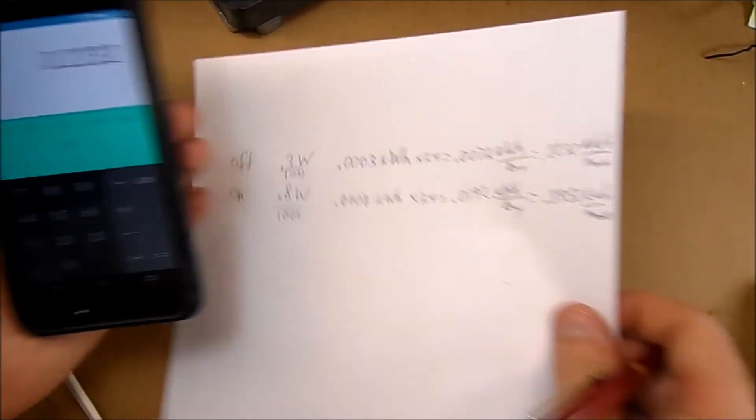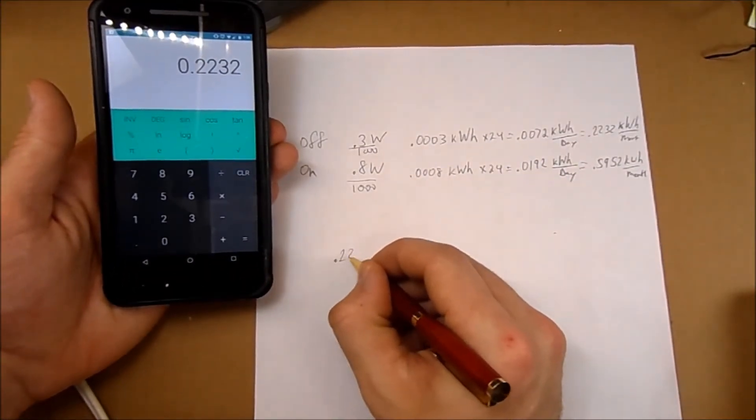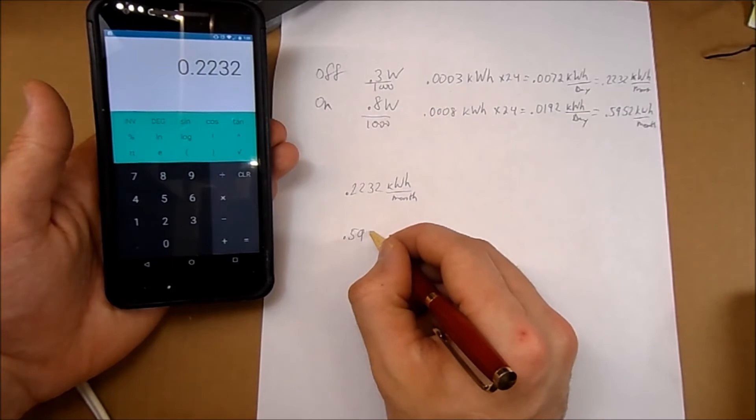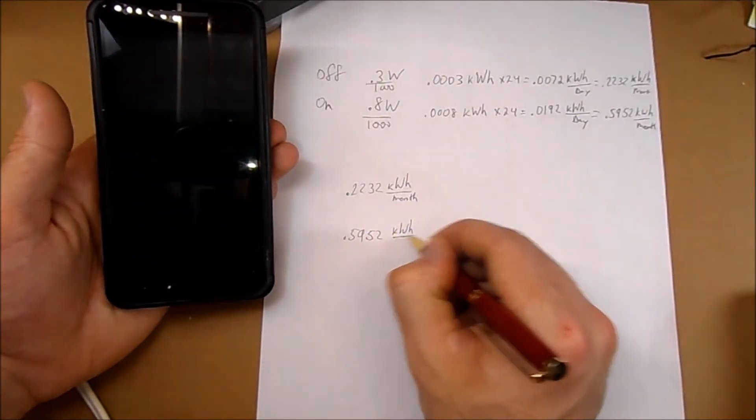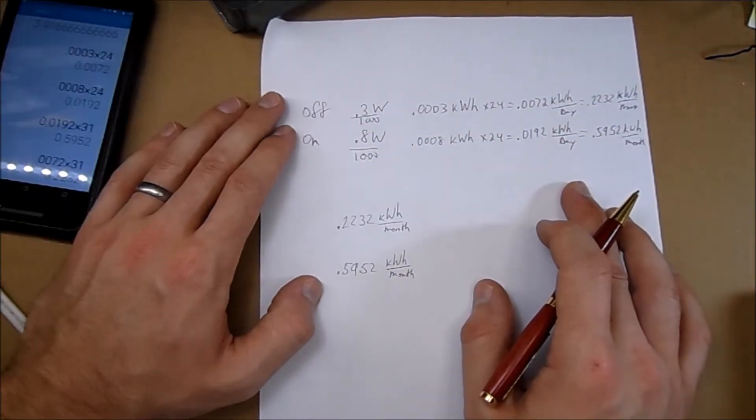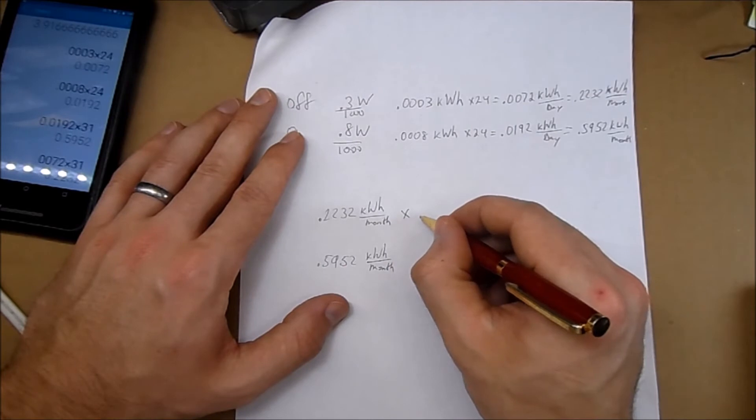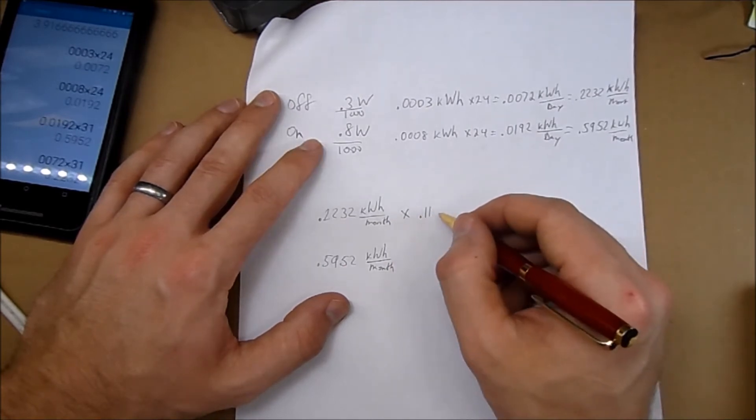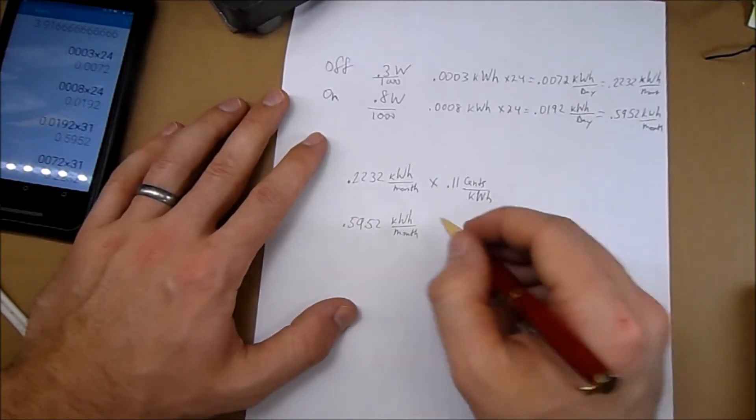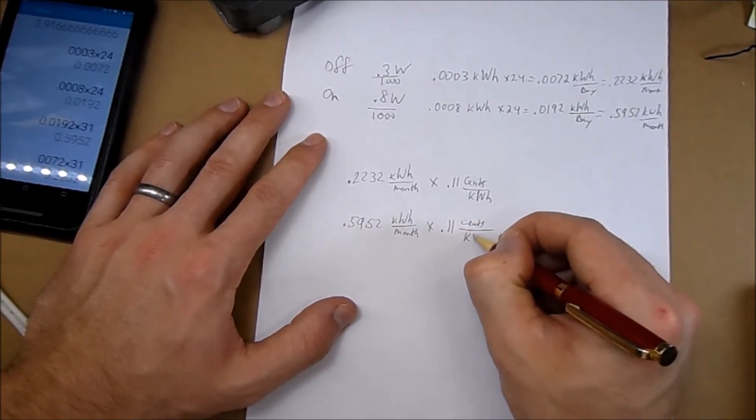I'll just kind of shorthand. Now how much is that actually going to cost in a month? So let's see, 0.2232 kilowatt hours per month and 0.5952 kilowatt hours per month. Now if we multiply this by the price of electricity, let's just say on average the average American pays, I think it's 11 cents per kilowatt hour. We multiply this by 0.11, and this is cents per kilowatt hour, and multiply that by 0.11 cents per kilowatt hour.